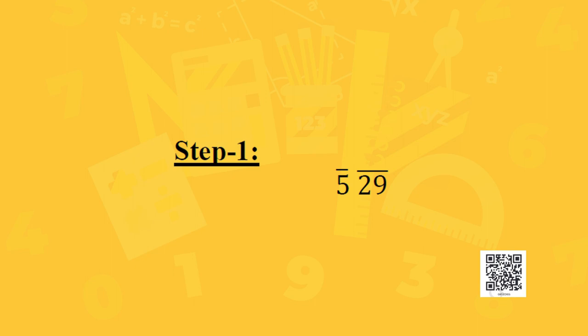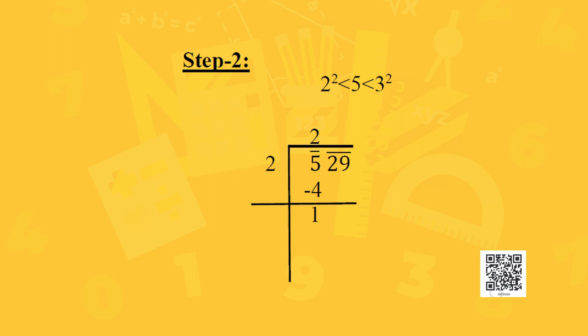In our example, 529: starting from the ones place, we make pairs of every 2 digits. The first pair is 29 and since we are left with only 1 digit, we put a bar on 5. In step 2, find the largest number whose square is less than or equal to the number under the extreme left bar. In our case, the number is 5 and 2 squared equals 4, which is less than 5. Taking 2 as the divisor and 5 as the dividend, by subtracting 4 from 5 we get remainder 1.